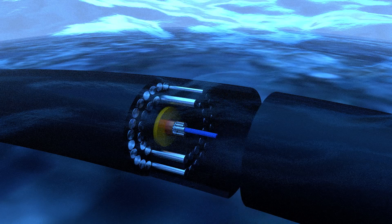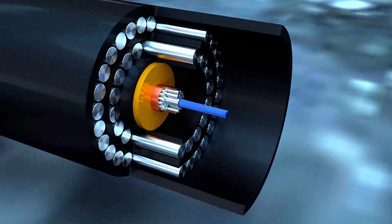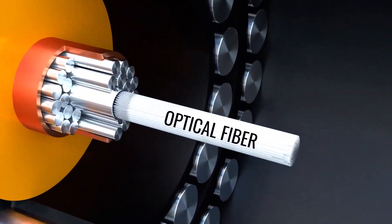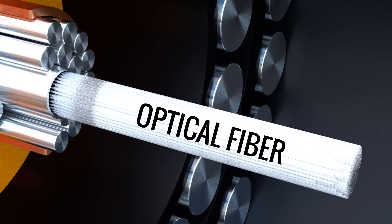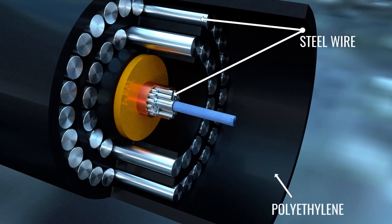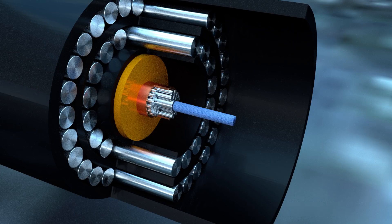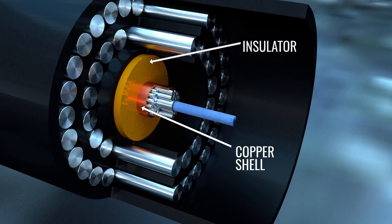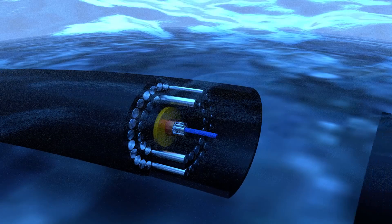A detailed cross-section view of an undersea cable is shown here. You can see that only a small portion of the cable is used for holding the optical fiber; the remaining area is a mechanical structure for protection and strength. The question is, where does the amplifier get power from under these deep oceans? For this, a thin copper shell is used inside the cable, which carries electric power along the cable so that the amplifiers can be powered.